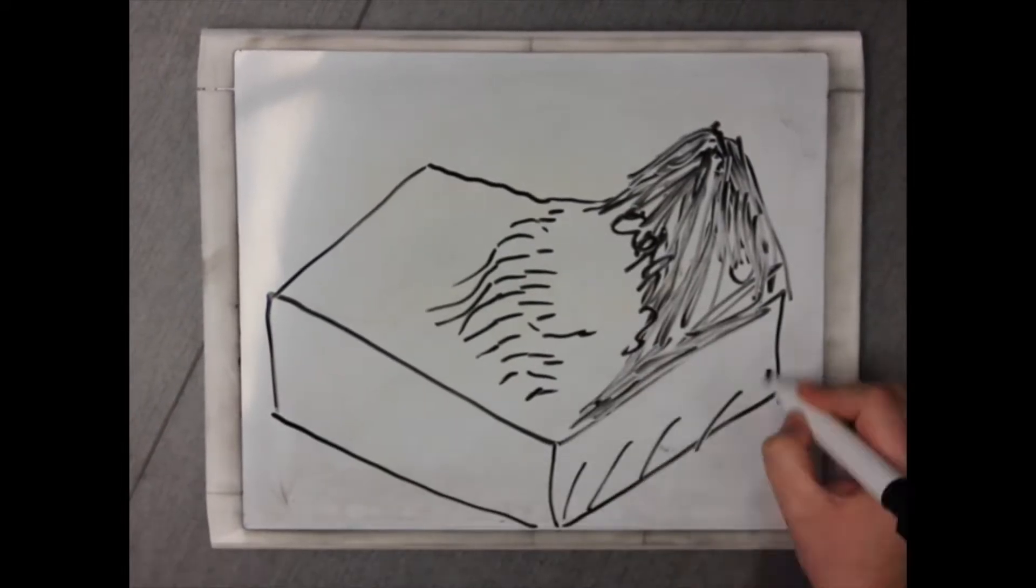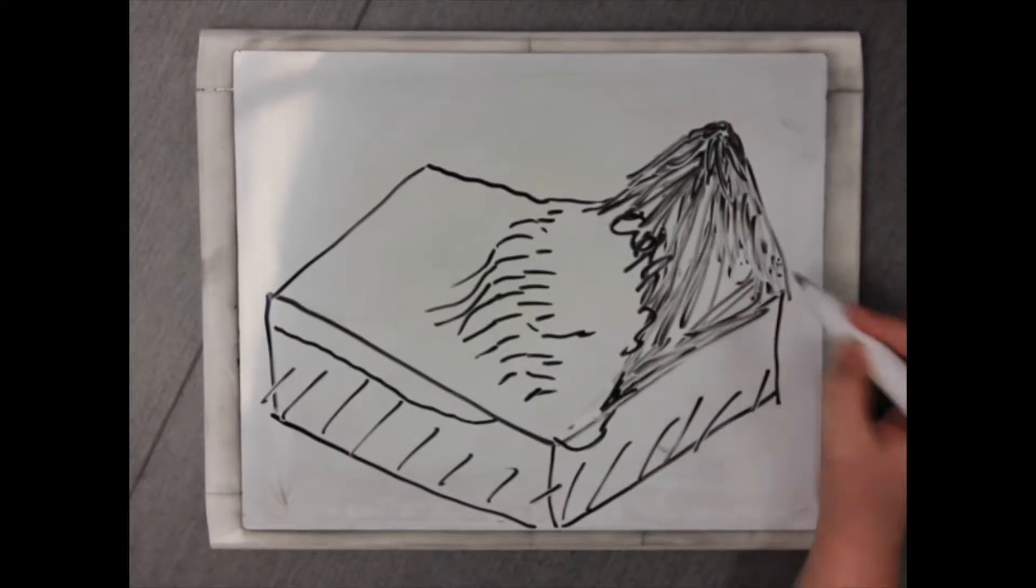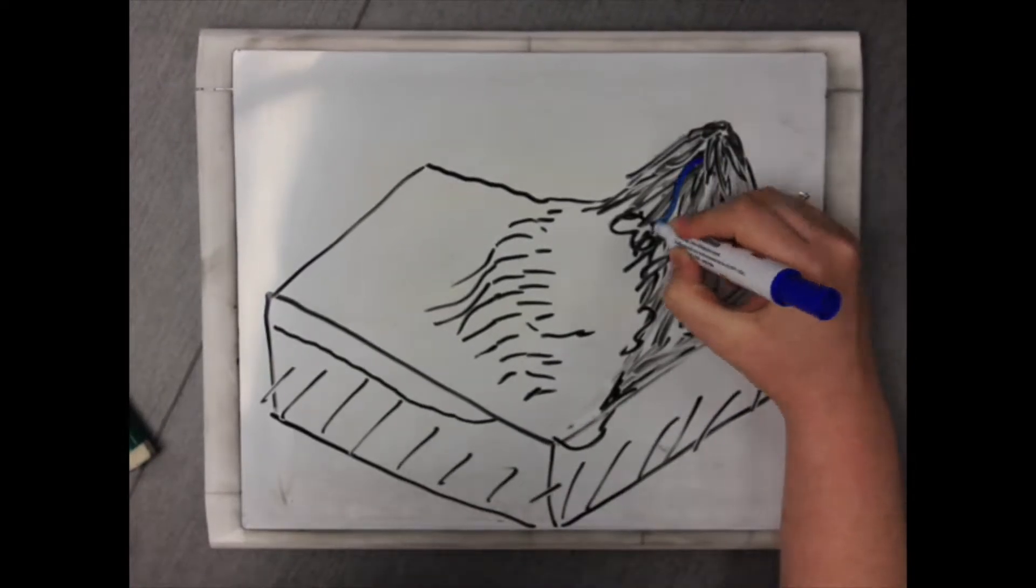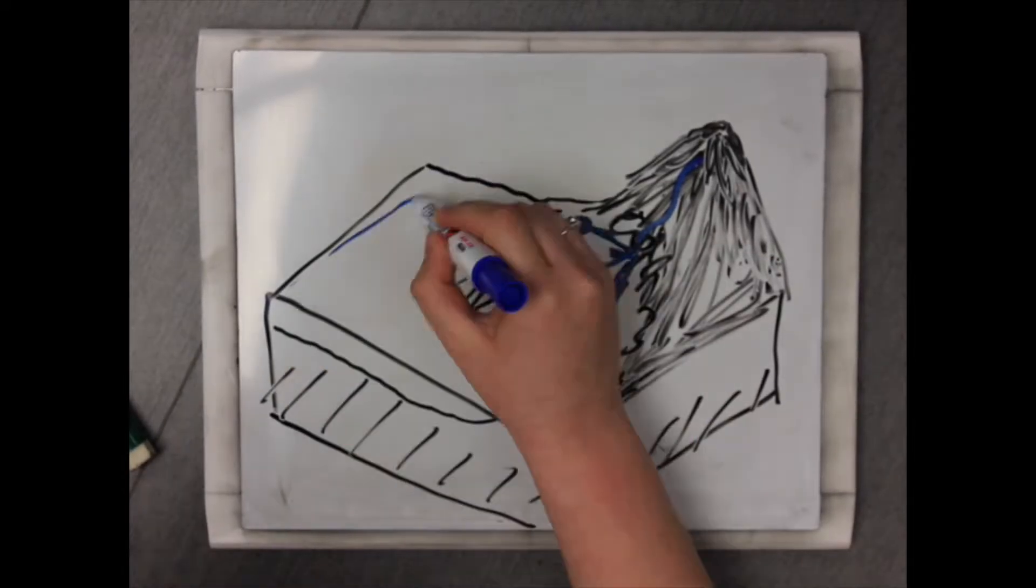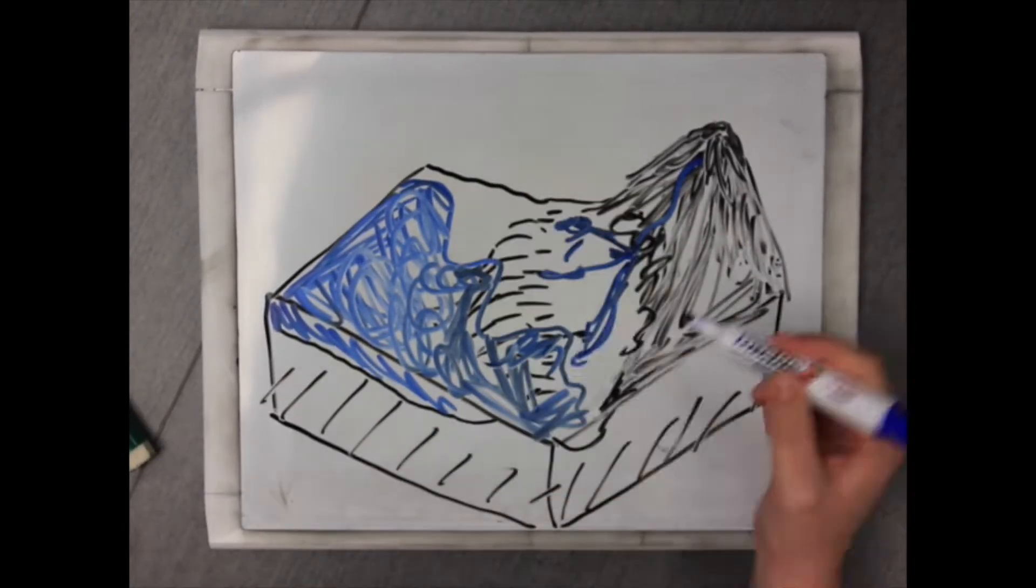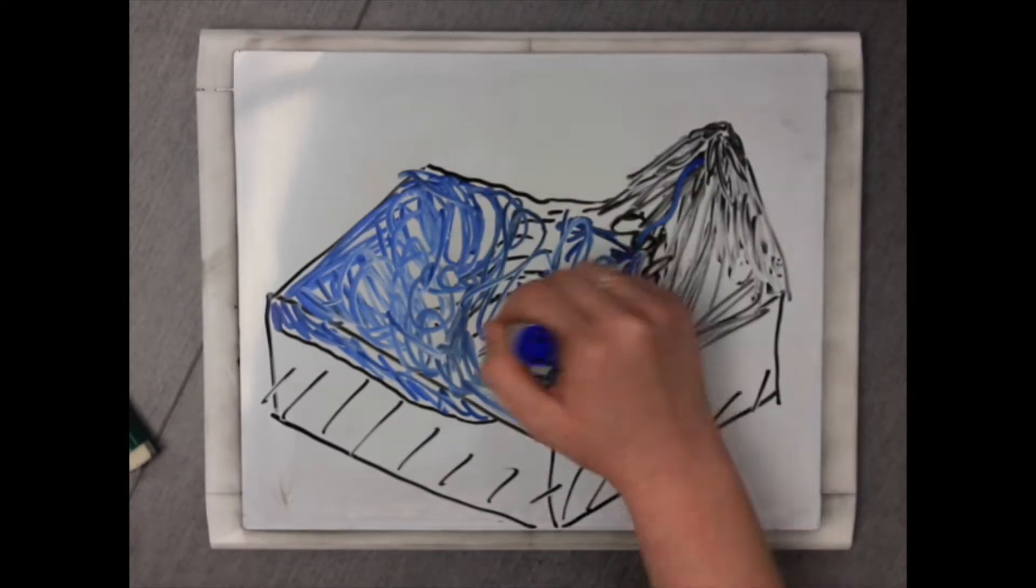But how did the sediment get there in the first place? There are several different floodplain depositional processes, the main two being vertical accretion and within channel accretion. Vertical accretion happens mainly along low gradient,